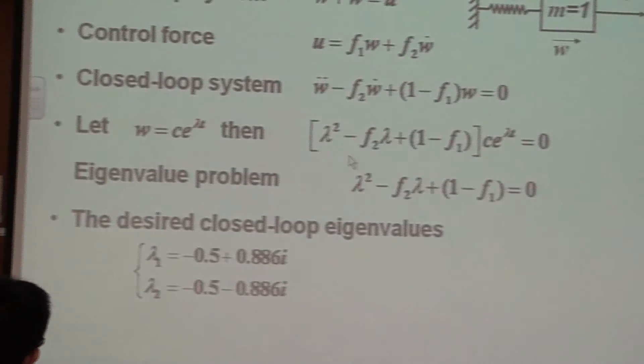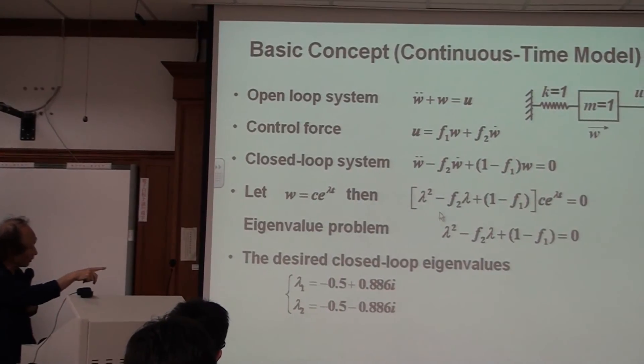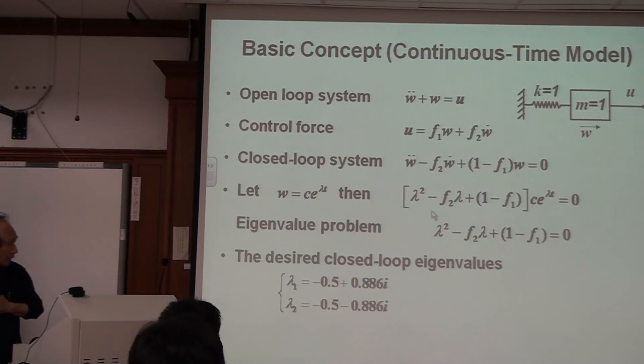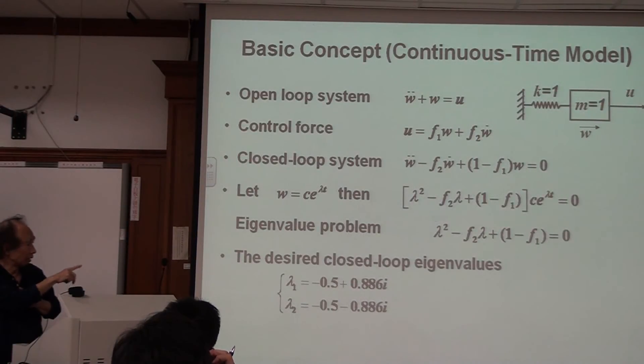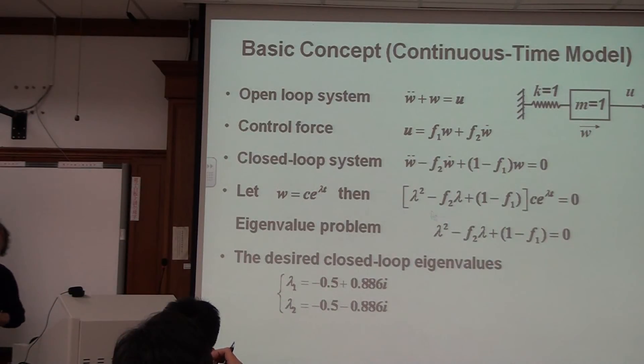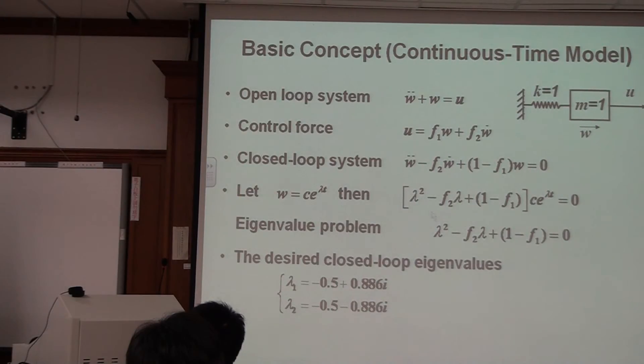And the desired, assume my desired closed-loop eigenvalue is minus 0.5 plus 0.886i. Lambda 2 is 0.5 minus 0.886i. Now you have to be careful about closed-loop eigenvalue. Closed-loop eigenvalue they come always as a pair. That means lambda 1, lambda 2 will be lambda 1 complex conjugate. That has to be conjugate pair. So when you design a control, be careful that lambda 2 and lambda 1 they are conjugate each other. That means if lambda 1 is complex, then lambda 2 must be equal to lambda 1 conjugate. All right?